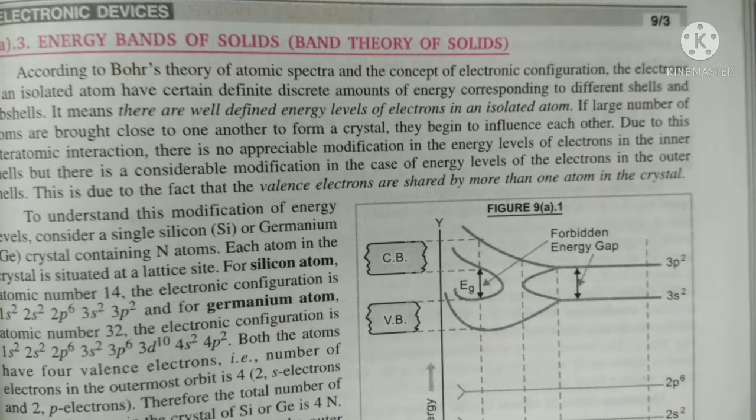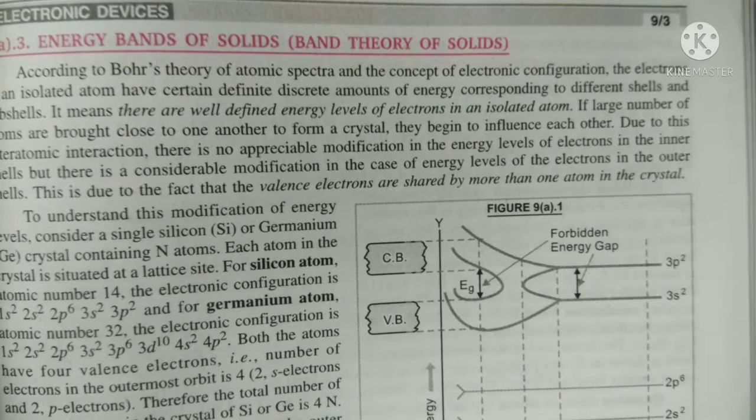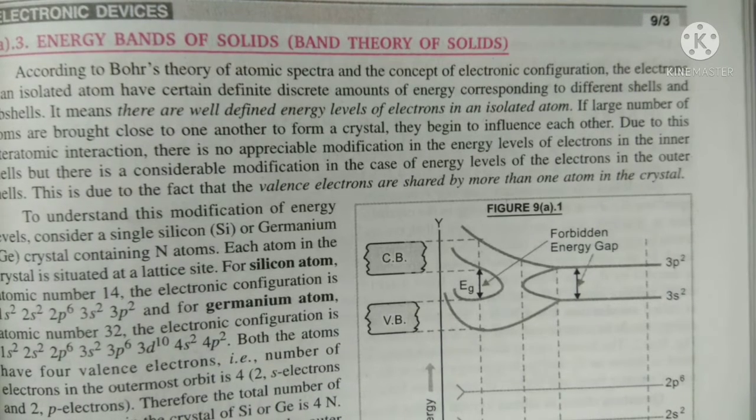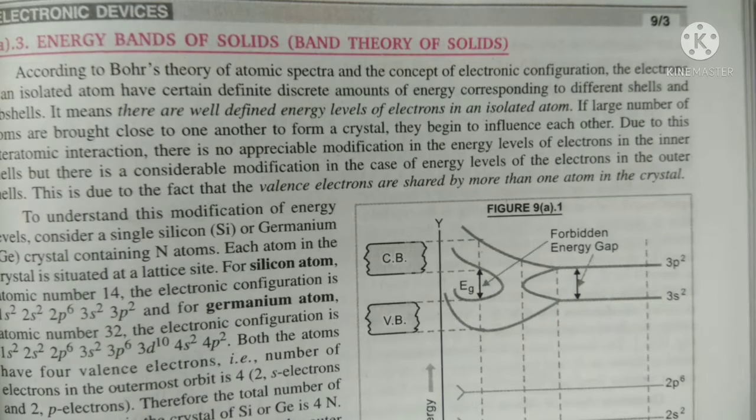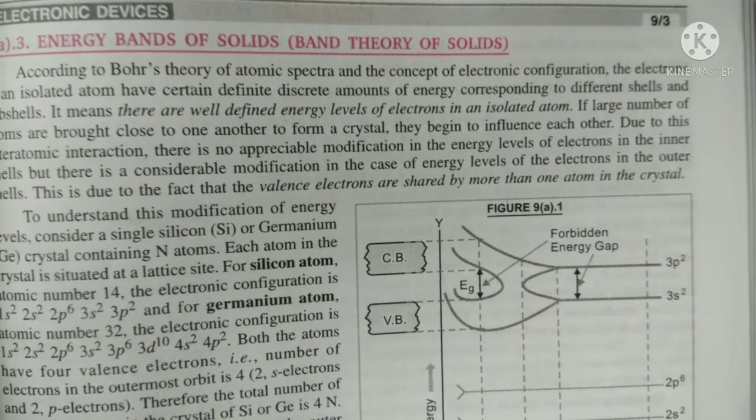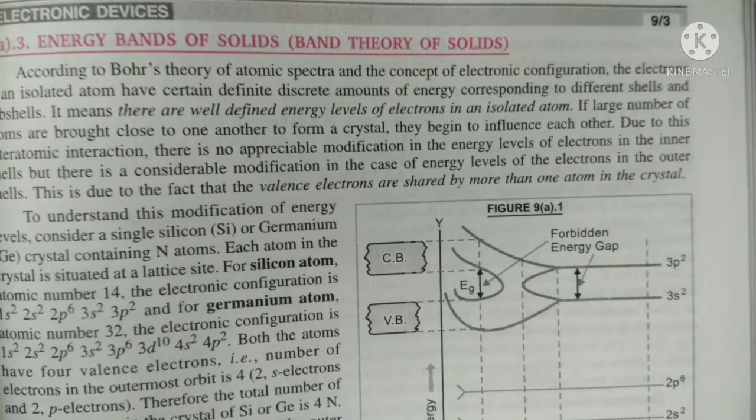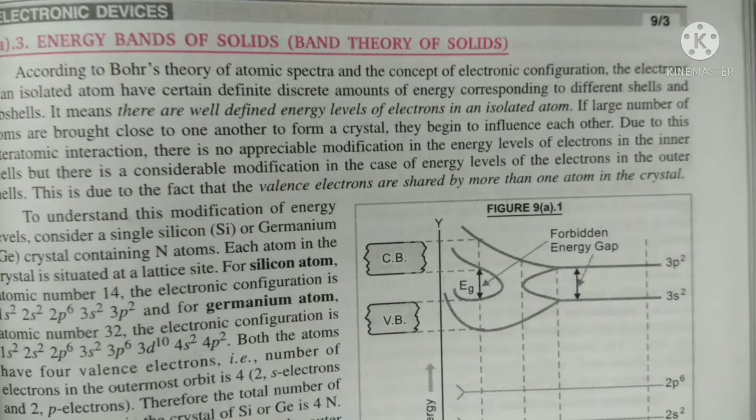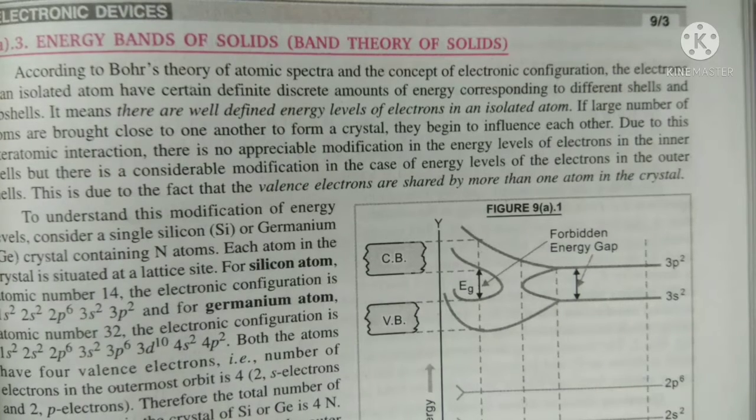According to Bohr theory of atomic spectra and the concept of electronic configuration, there are well-defined energy levels of electrons in an isolated atom. But if large number of atoms are brought close to one another to form a crystal structure, they begin to influence each other.